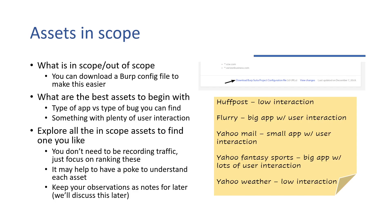So what are the best assets to begin with? You've got two sides: the type of app versus the type of bug you can find. You can find business logic errors in stores, you can find IDORs in complex user roles. In general, it's better to start with an app that has plenty of user interaction. However, if you're a beginner, I would recommend looking for IDORs or business logic errors, focusing on apps likely to have those two bugs because they don't require a lot of security knowledge. They pay out — they are good bugs.